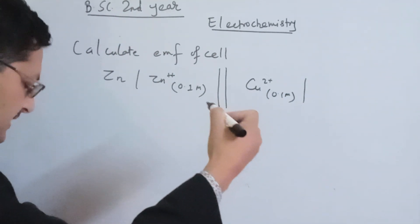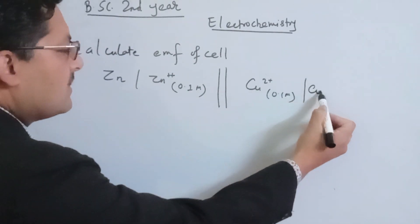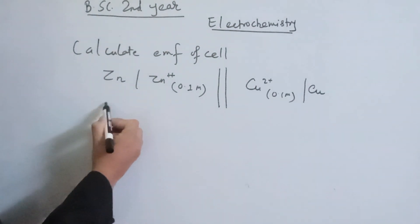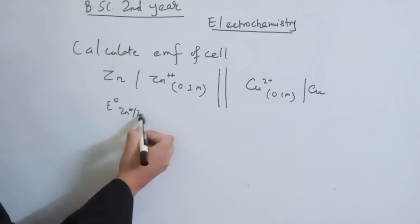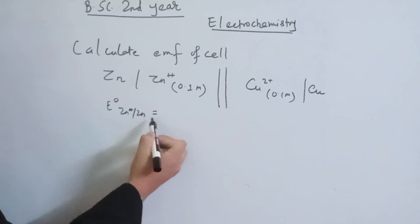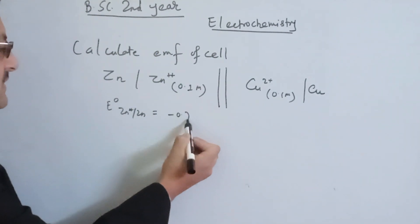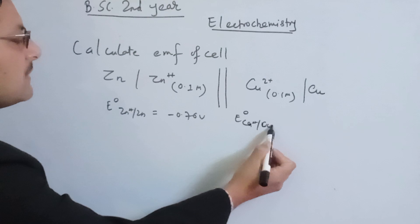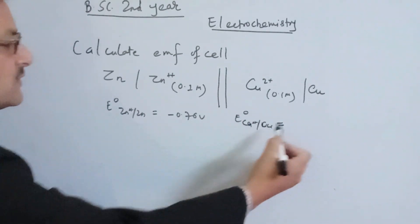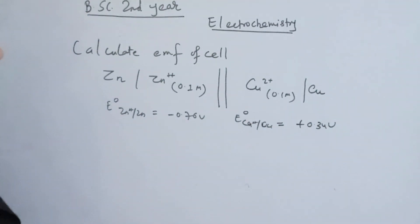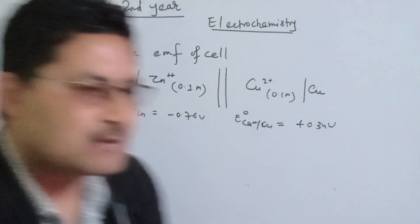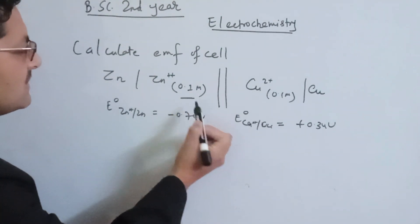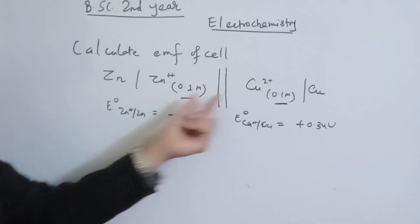We have already been given the standard reduction potential of the Zinc system: E°(Zn²⁺/Zn) = −0.76 V. The standard reduction potential of the copper system is: E°(Cu²⁺/Cu) = +0.34 V. We need to apply the Nernst equation using these concentration values of 0.1 molar each.